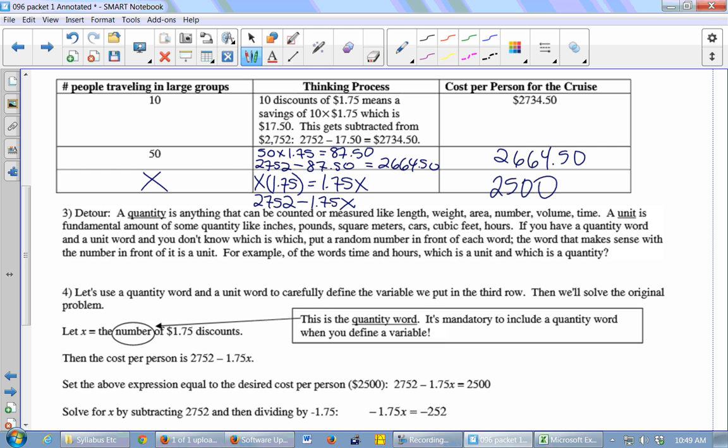So for example, if you have the words time and hours, does one time or one hour make sense? One hour. So that means that hours is the unit. Hours is the unit, and time is a quantity.